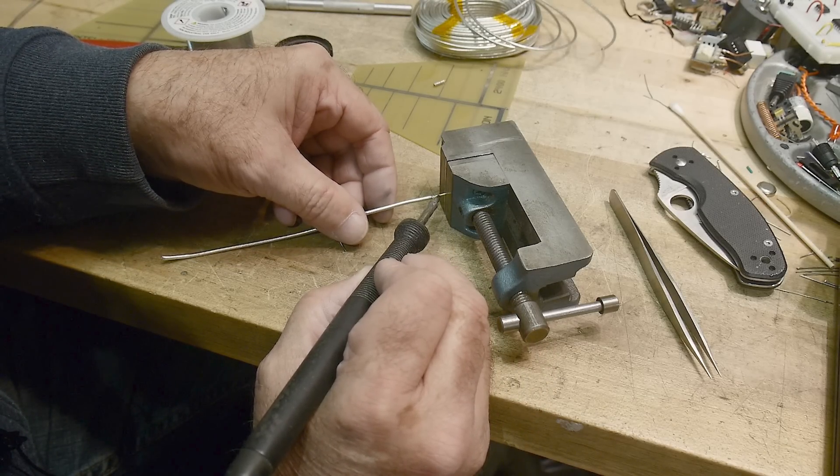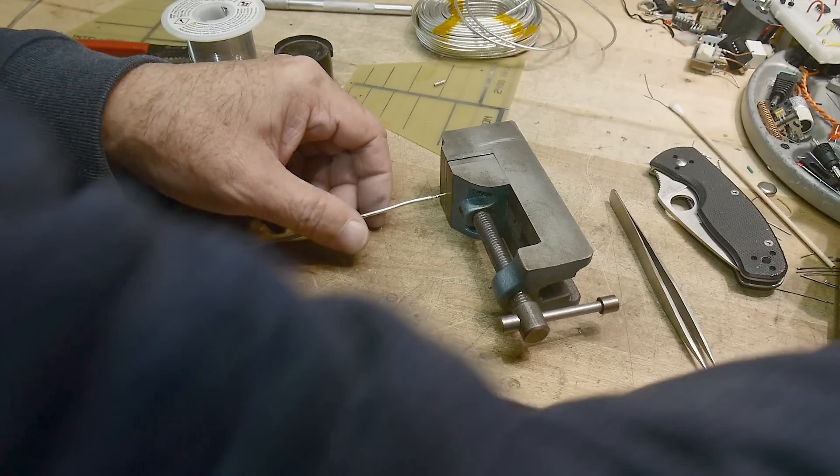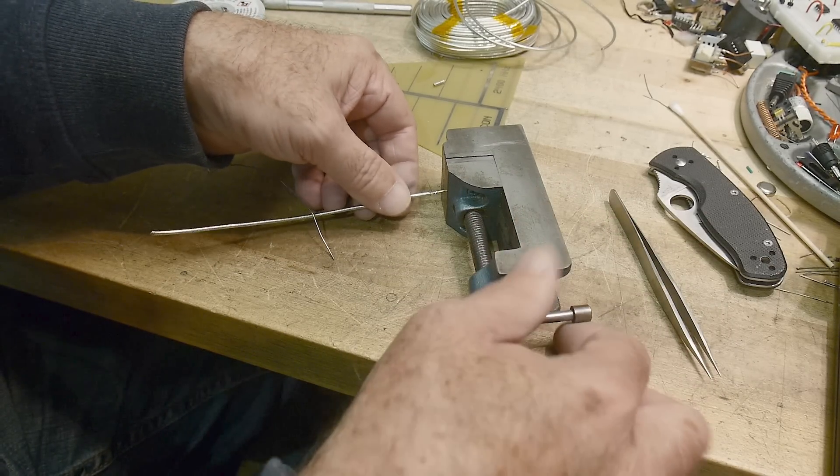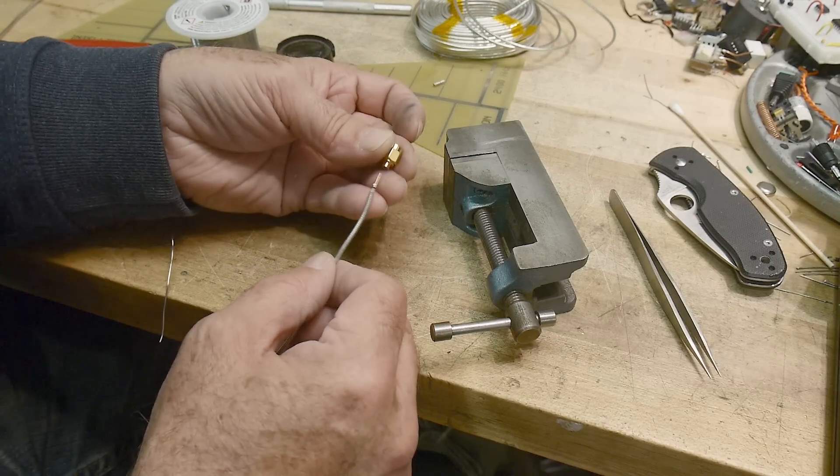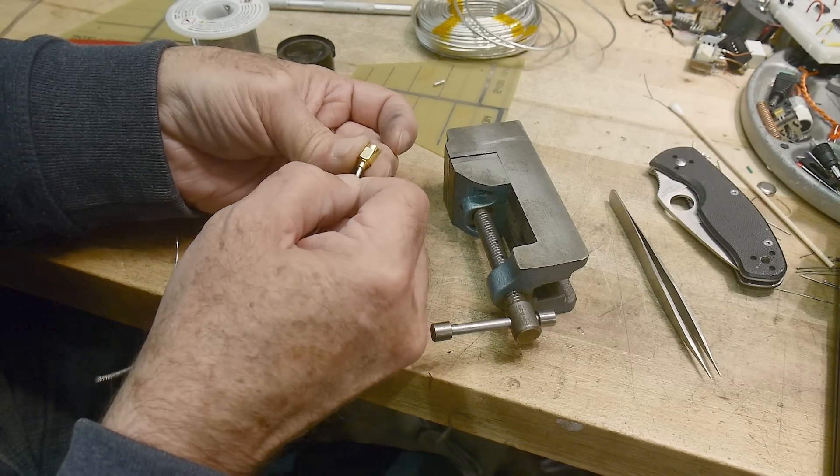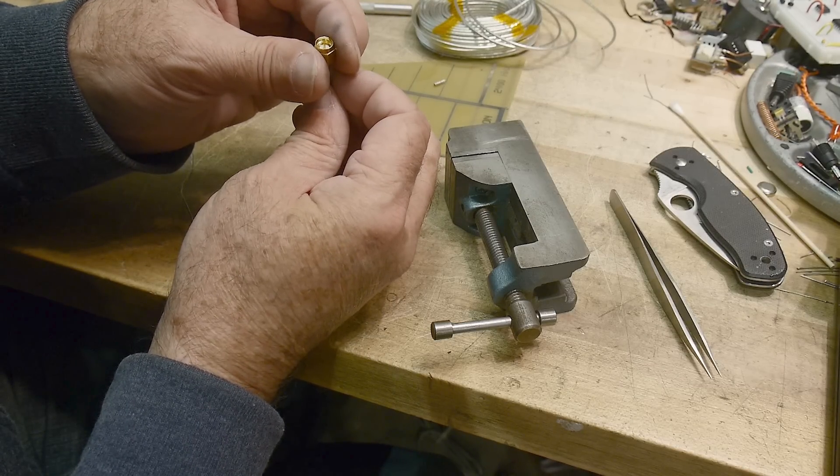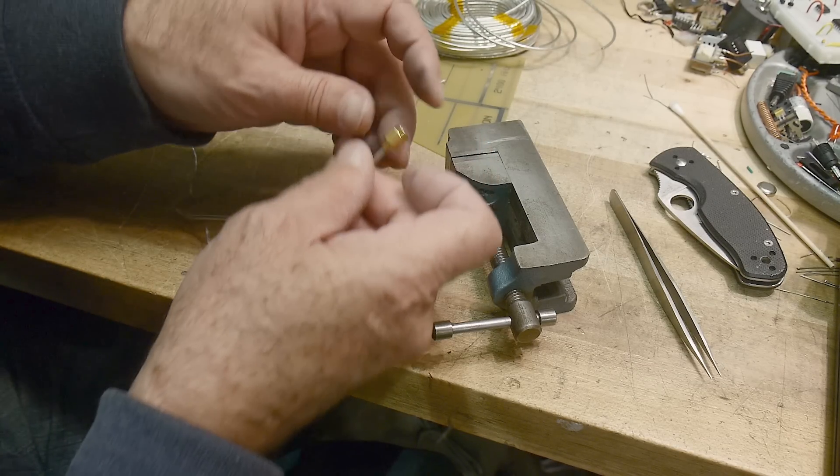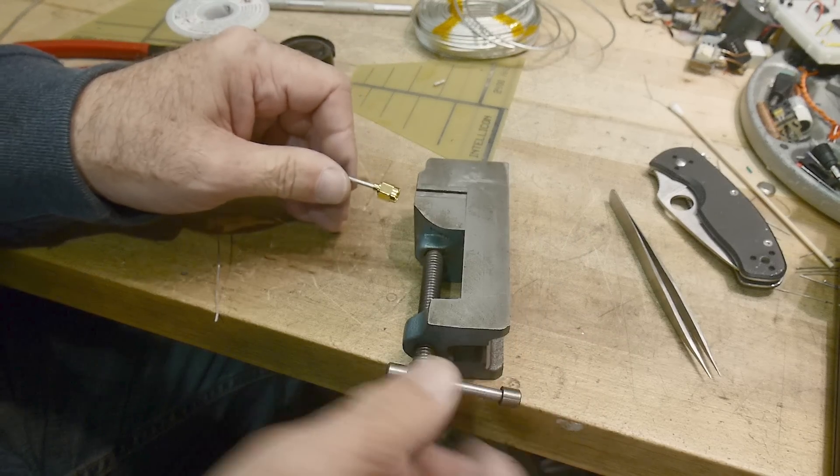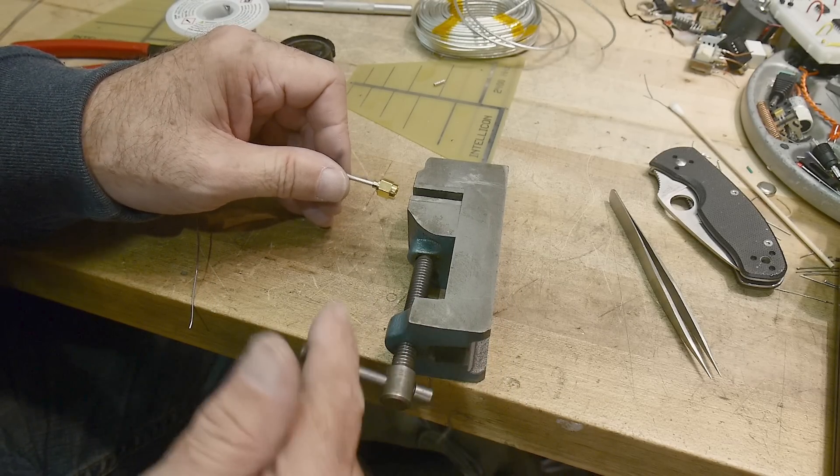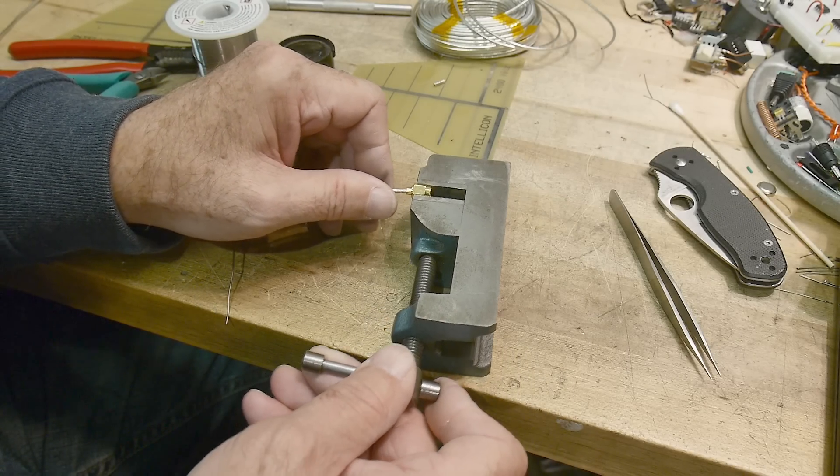It didn't quite wick all the way. There we go. All right. So now we have the center pin on the coax and we can insert it into the connector and look on the other end. Looks like the pin is sticking out a good distance. It should be almost flush with the end of the connector, which I can feel it almost is. Let's hold this because it's going to get hot. I don't want to be holding it with my fingers.